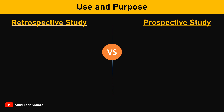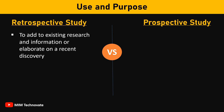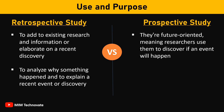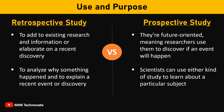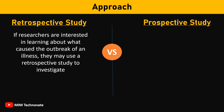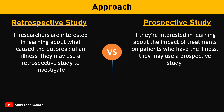Use and purpose: The purpose of a retrospective study is typically to add to existing research and information or elaborate on a recent discovery. Researchers use retrospective studies to analyze why something happened and to explain a recent event or discovery. Prospective studies differ because they're future-oriented, meaning researchers use them to discover if an event will happen. The key difference between the two study types is their approach — if researchers are interested in learning about what caused the outbreak of an illness, they may use a retrospective study; alternatively, if they're interested in learning about the impact of treatments on patients who have the illness, they may use a prospective study.